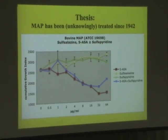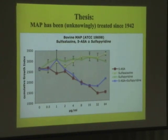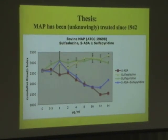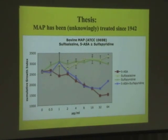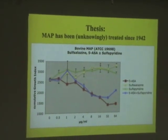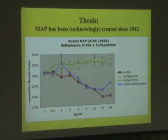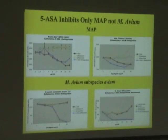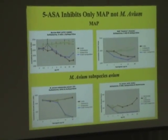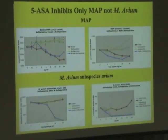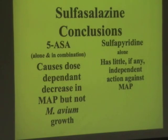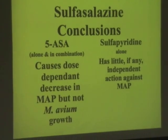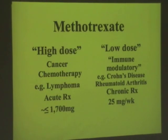All of the data I'll be presenting is shown with the cumulative growth index along the ordinate and the concentration of the agent along the abscissa. I want you to look at only two lines here. The white line is the negative control — the intact molecule of salicylic acid. The red line shows dose-dependent inhibition by 5-ASA. The two upper panels show paratuberculosis with dose-dependent inhibition — subtle, but it's there. In contrast, with avium, the red line shows no inhibition whatsoever. Conclusions: 5-ASA alone and in combination causes dose-dependent decrease in paratuberculosis but not avium growth, and sulfapyridine alone has little, if any, independent action.